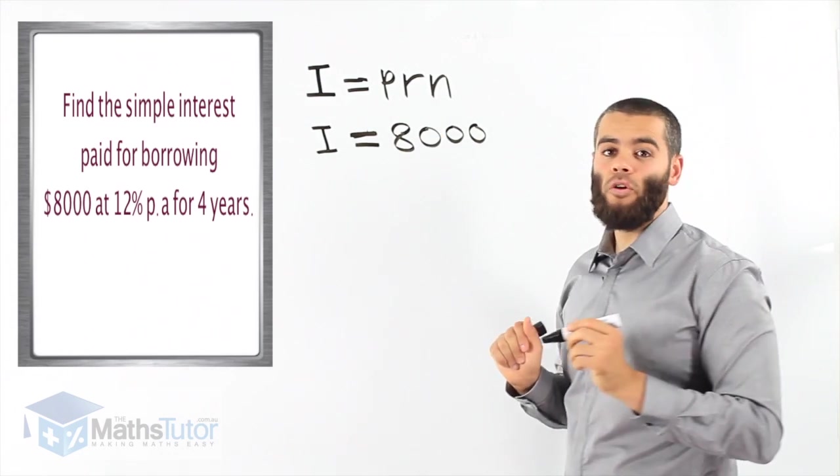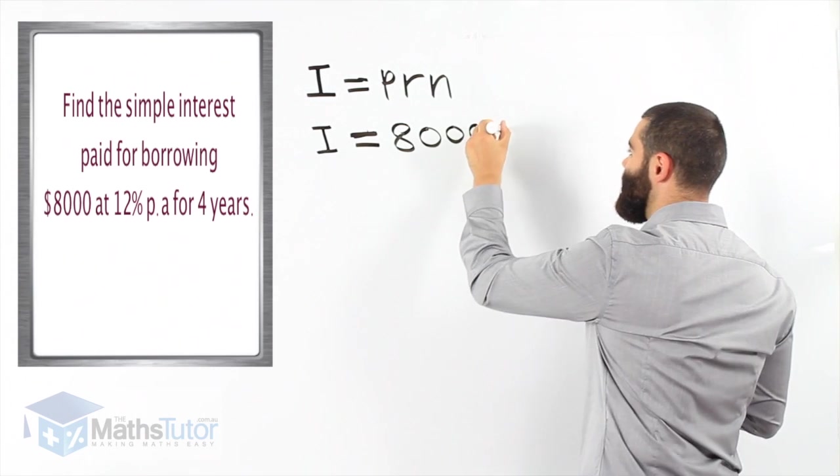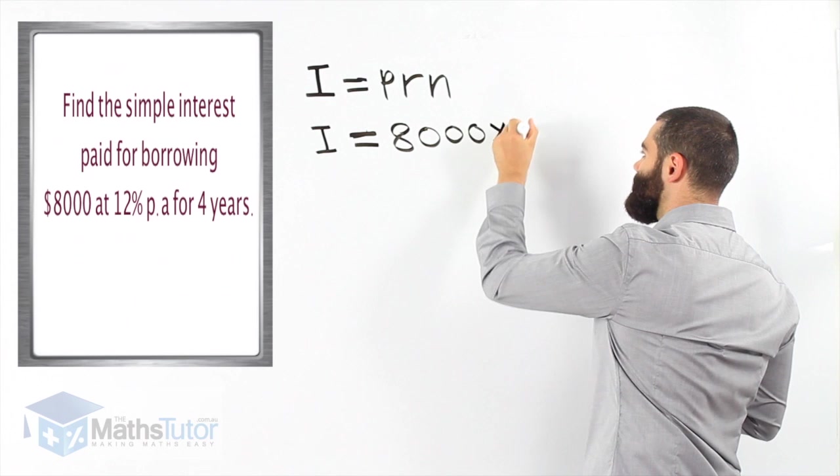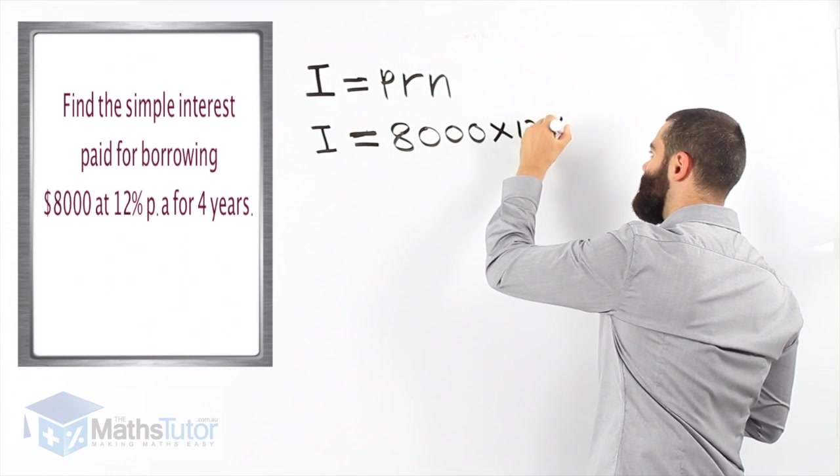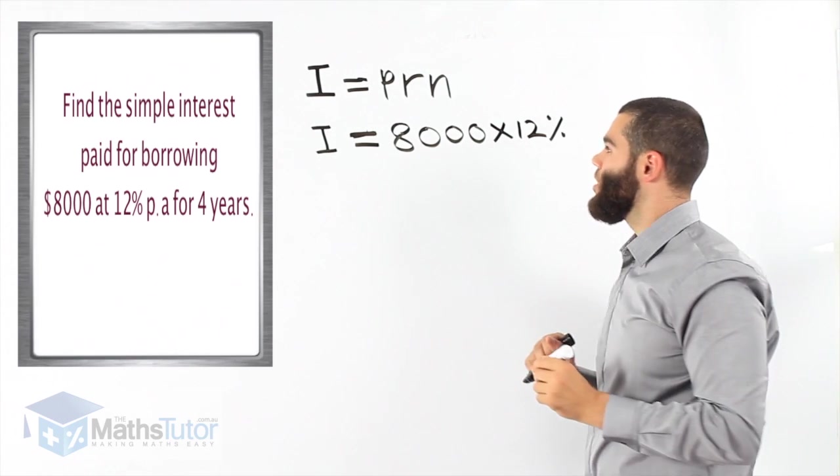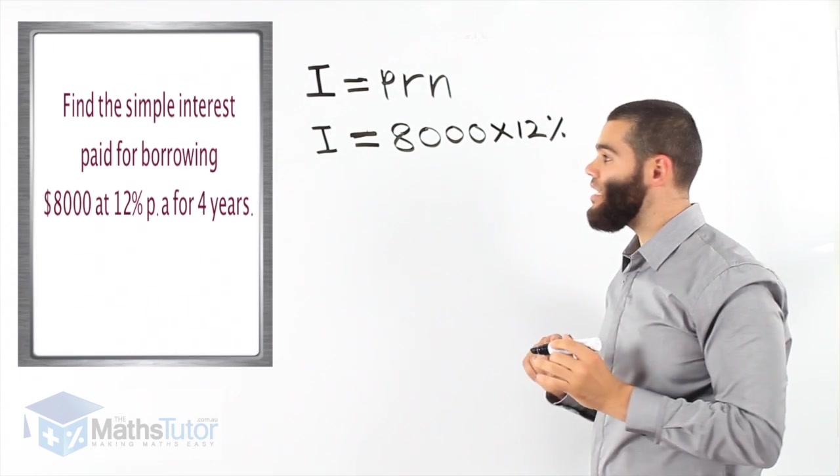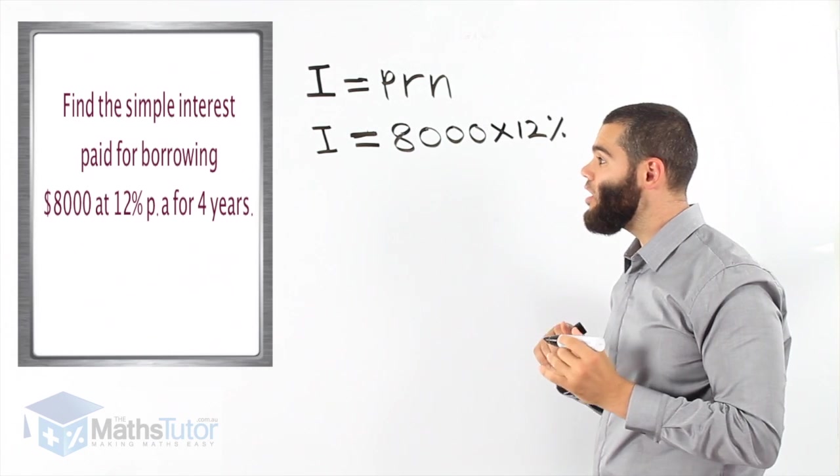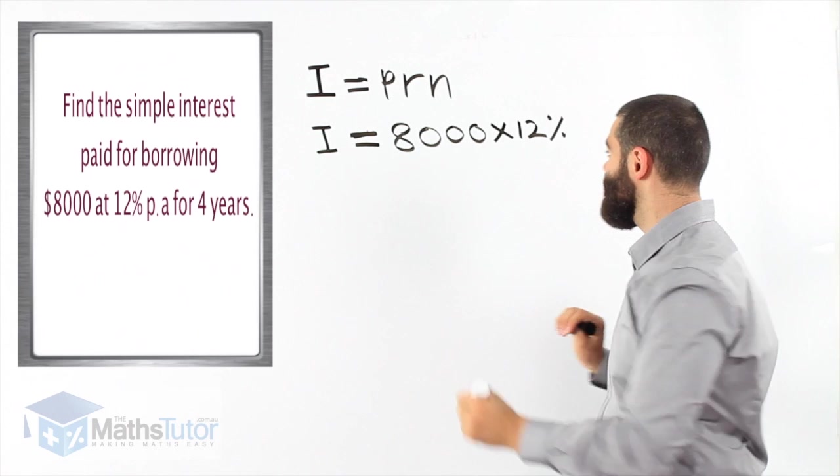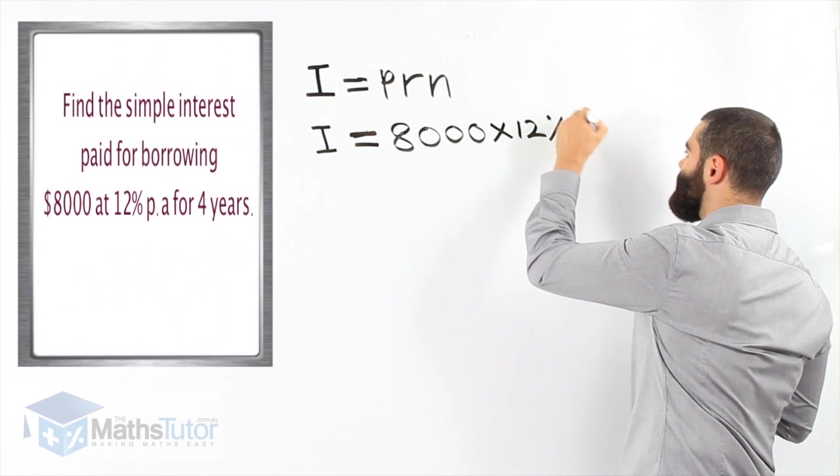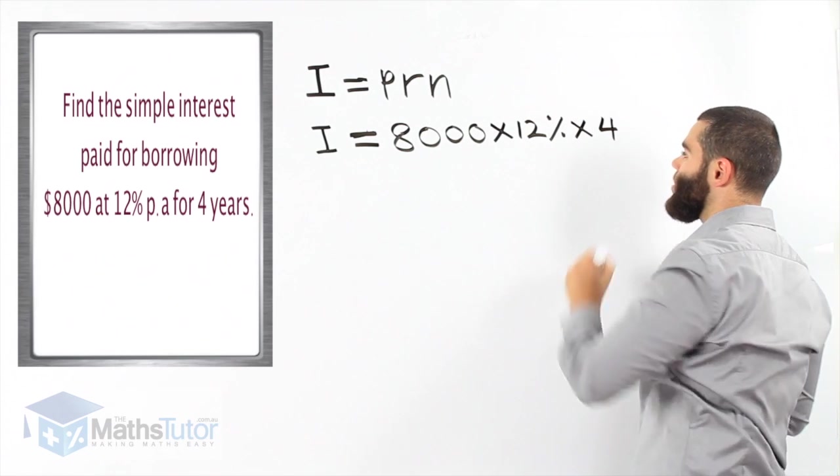At the rate, we know the rate is 12% per annum. And the number of periods, meaning the number of years that this amount is being borrowed for, it's been borrowed for four years. So, we times it by four.